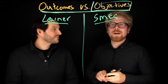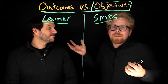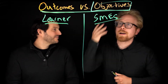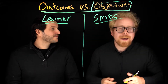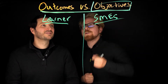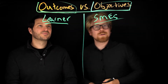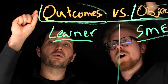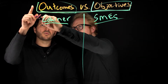An objective is what you go into the classroom as a teacher with. Our objective for this video was to tell you the difference between outcomes and objectives. But the outcome is — now you know — and when you build your program, you're going to focus on the outcomes, the learning outcomes, not the learning objectives. These are the results, and this is what you want to focus on because it's learner-based.